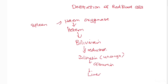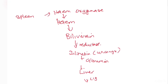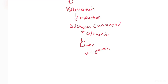Once at the liver, the liver cells — called hepatocytes — take up the bilirubin. The albumin releases the bilirubin, which attaches to the hepatocytes. A protein called ligandine binds to the unconjugated bilirubin, allowing it to pass through the cytoplasm and enter the smooth endoplasmic reticulum.